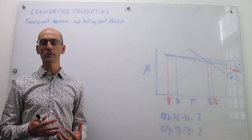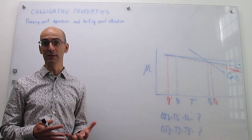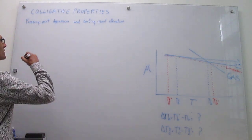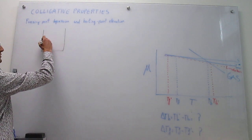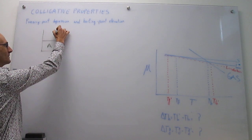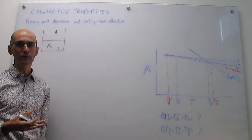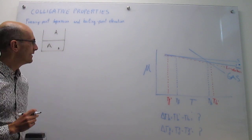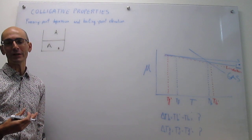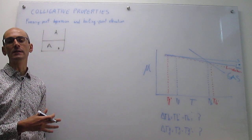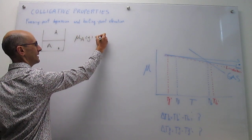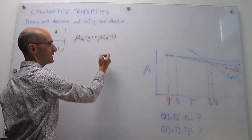The derivation is a little long, so I have split it into two videos — this is the first one, and I recommend you watch the next one back to back. We are examining an equilibrium between a solution phase, where you have your solvent and a tiny bit of solute B, and the gas phase where there is only solvent. The solute has to be non-volatile. If we are at equilibrium, the chemical potential of solvent A in the gas phase must equal the chemical potential of A in the liquid phase.